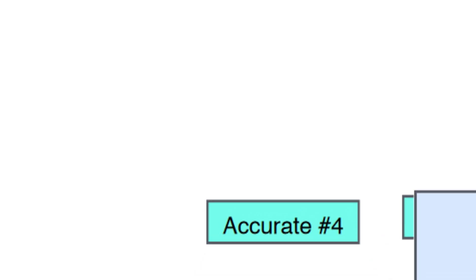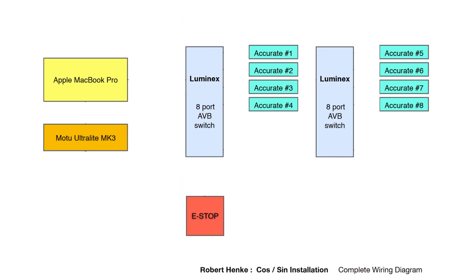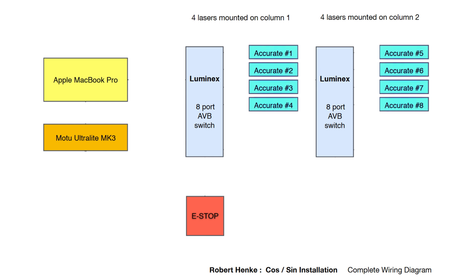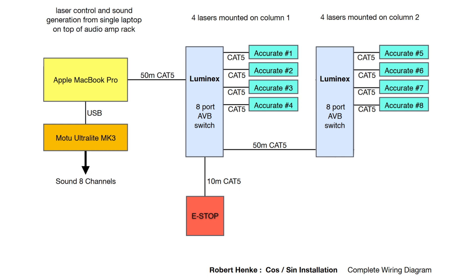This allows for easy control and monitoring of small as well as larger installations, as you can see on this example, as used by well-known laser artist Robert Henke for his installation CosSyn. He used 8 Fanon Accurate which were controlled by AVB with one laser disable button. All main settings are done here through the LA Toolbox.